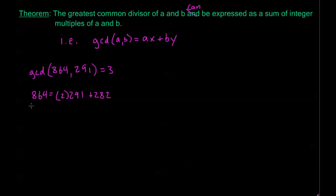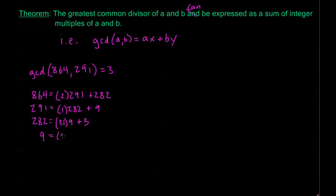Looking at 291: 291 equals 1 times 282 plus 9. Then 282 is equal to 31 times 9 plus 3. And 9 equals 3 times 3 plus 0. So my GCD is 3 from our Euclidean algorithm.